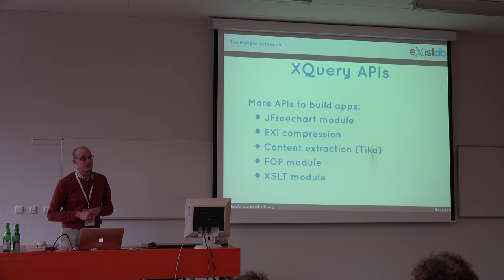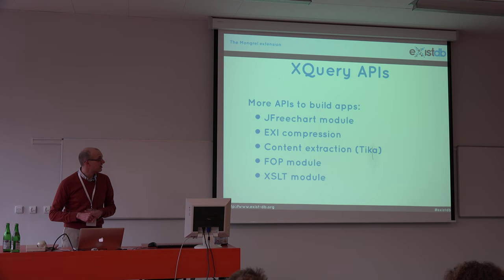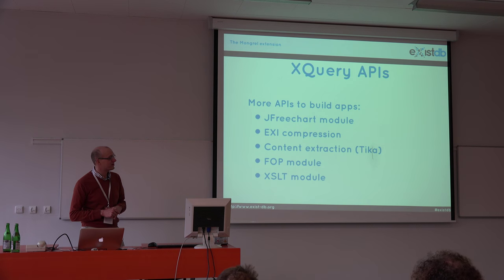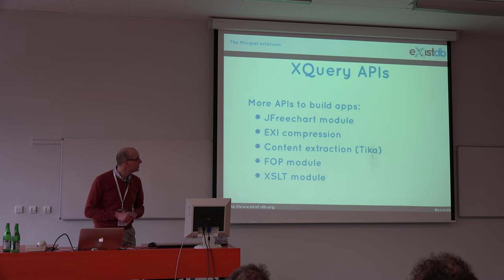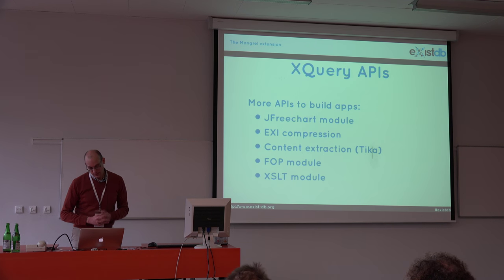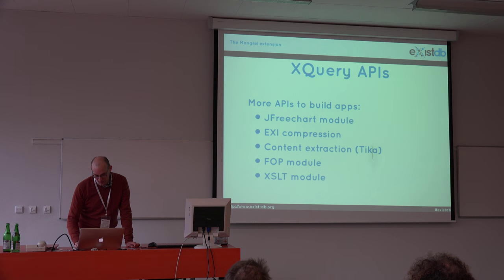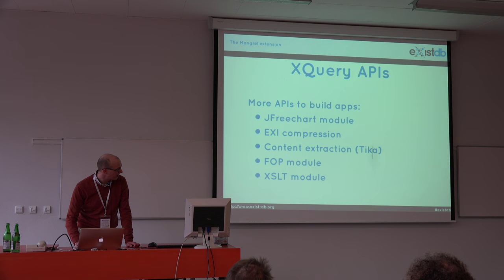To finalize, we have other APIs where you can do lots of nice things. The JFreeChart module will be shown in a small demonstration later today. EXI compression — XML data can get really large, and EXI is one of the standards to compress XML data. There's the Content Extraction module based on Apache Tika, which we use to parse all kinds of data such as PDF files and make nice indexes out of them. And the FOP module to generate PDFs, and an XSL module to do XSL transformations.